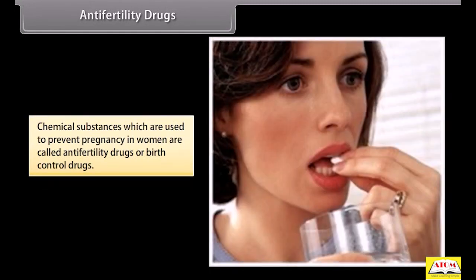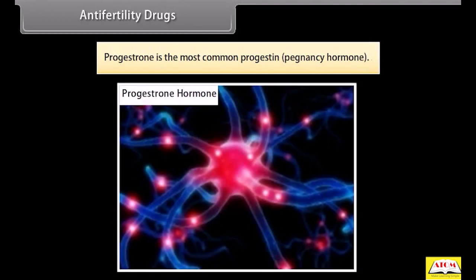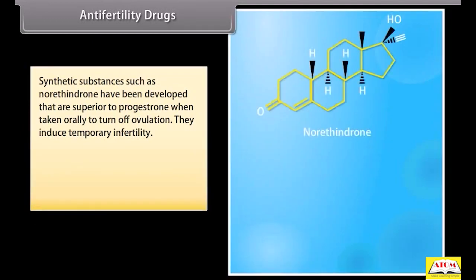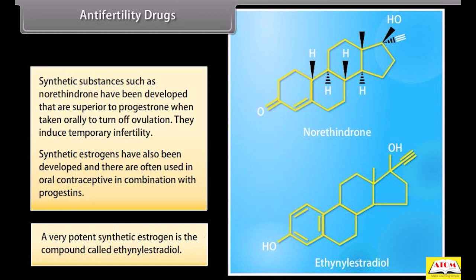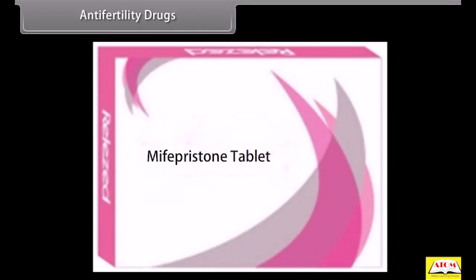Antifertility drugs: chemical substances used to prevent pregnancy in women are called antifertility drugs or birth control drugs. Progesterone is the most common progestin. Synthetic substances such as norethindrone have been developed that are superior to progesterone when taken orally to turn off ovulation; they induce temporary infertility. Synthetic estrogens have also been developed and are often used in oral contraceptives in combination with progestins. A very potent synthetic estrogen is ethinyl estradiol. Mifepristone is a synthetic steroid that blocks the effects of progesterone and is used as a morning-after pill in many countries.